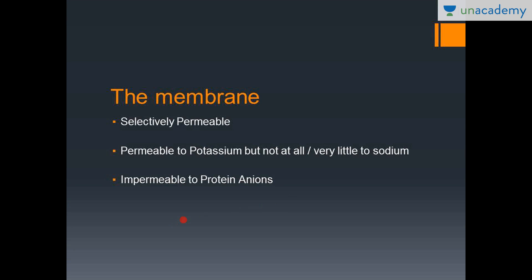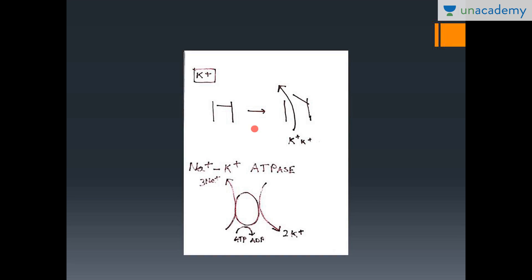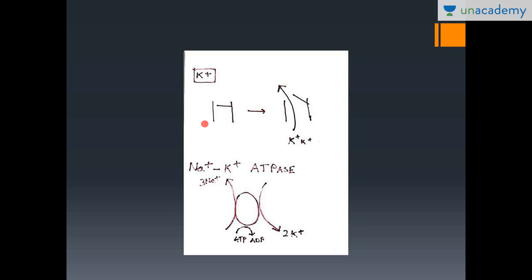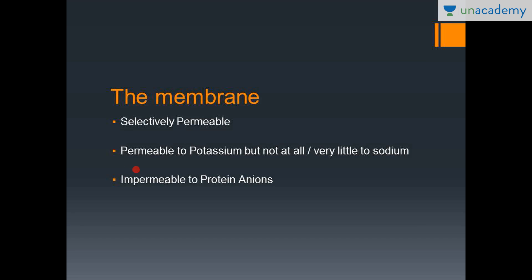The membrane is a selectively permeable membrane, permeable only to potassium and almost not at all to sodium, and impermeable to the protein anion. Irrespective of the gated channels, the membrane in general is more permeable to potassium through non-specific channels present even at rest. These non-specific channels are permeable to potassium but not to sodium, and they are impermeable to the protein anions.